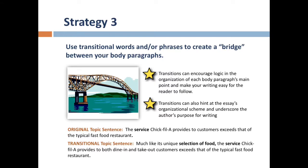The original reads: 'The service Chick-fil-A provides to customers exceeds that of the typical fast food restaurant.' The transitional version says: 'Much like its unique selection of food, the service Chick-fil-A provides to both dine-in and take-out customers exceeds that of the typical fast food restaurant.' Notice how the added transition, in conjunction with the expanded content, hints at an underlying point of significance — that all of the roadmap's main points might add up to mean that Chick-fil-A is not only different from the traditional fast food restaurant, it is in fact better.